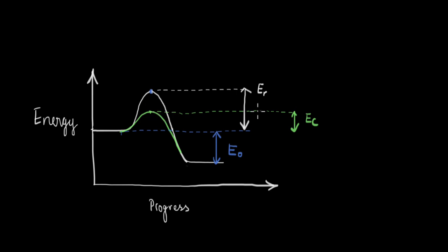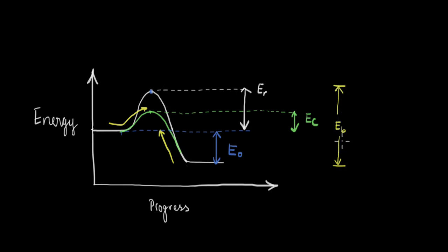For the forward reaction, EC is less than ER, so the barrier is reduced as we move from reactants to products. For the reverse reaction — going from the product side to the reactants — the activation energy is also lower with the catalyst. Without the catalyst, the activation barrier for the reverse reaction is ER plus E0, the total barrier represented by EB. When you introduce a catalyst, the activation barrier becomes EC plus E0, a smaller value denoted by EB dash. So the catalyst is not only speeding up the forward reaction; it is also speeding up the reverse reaction by the same amount.